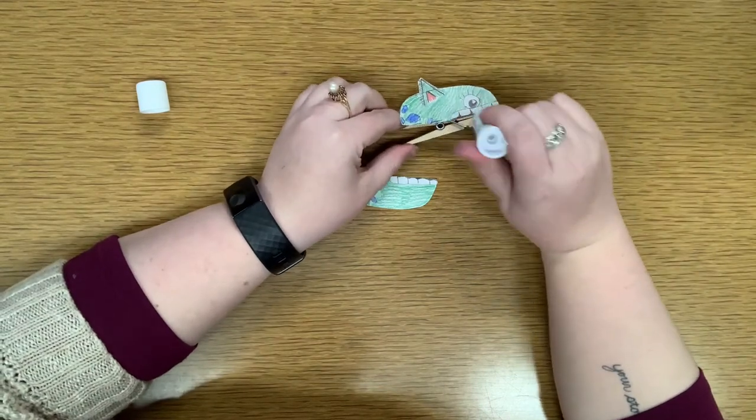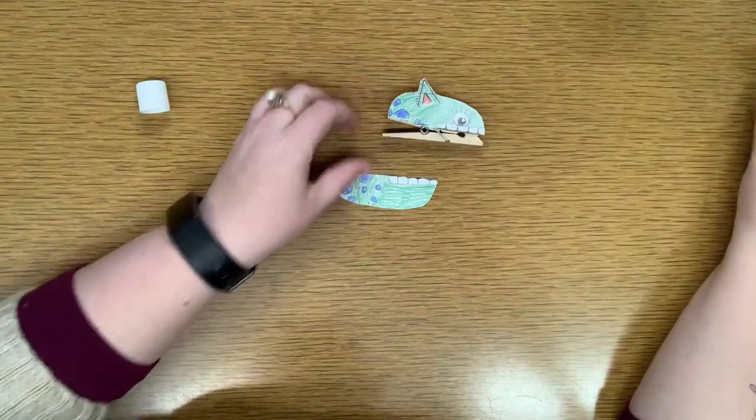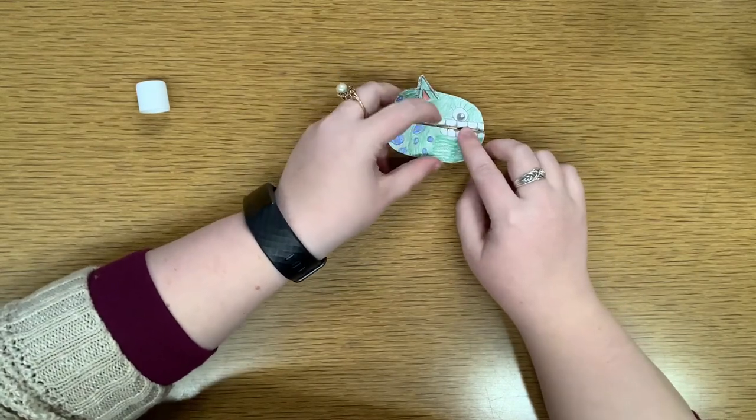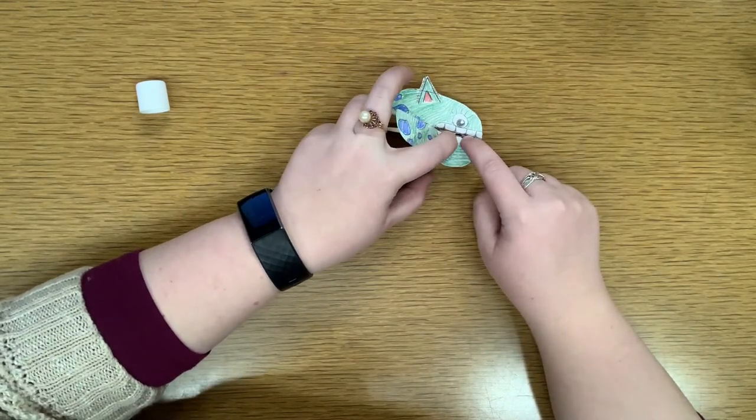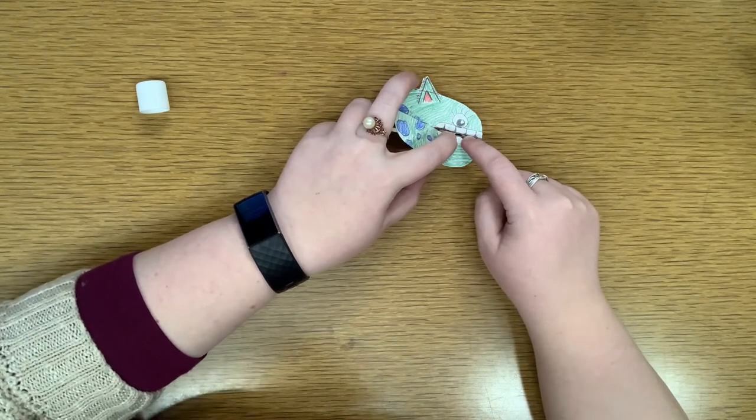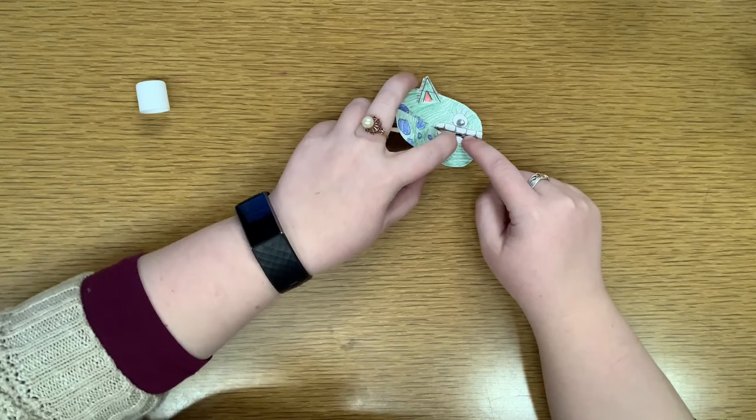I'm going to do the same thing. I'm going to put some glue on the bottom. I'm going to set my circle there. Line up those teeth the way I want them. And I'm going to hold it for ten seconds. Ten, nine, eight, seven, six, five, four, three, two, one.